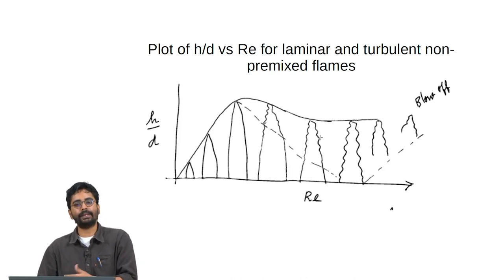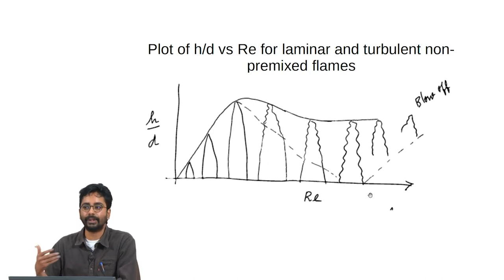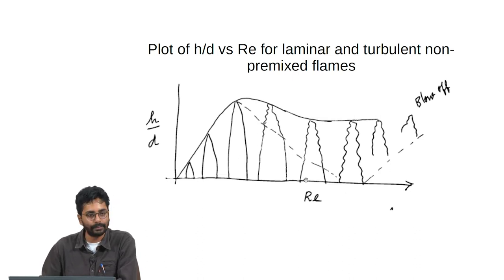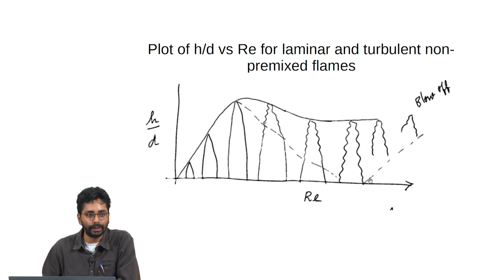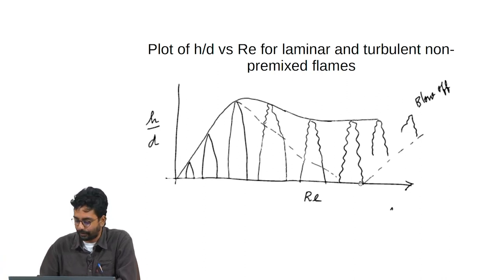This is a simple demonstration that turbulence increases the consumption rate of fuel. The height remains constant but as Reynolds number increases, more fuel is issuing to the flame. Within the same reaction volume, the extra fuel is consumed — the reaction rate or consumption rate of fuel is enhanced by turbulence, not by chemical reaction rate but simply because of enhanced mixing due to turbulence.